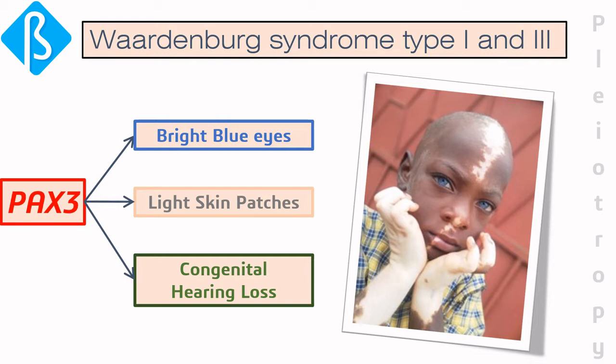Exactly the same phenomenon is seen in Waardenburg syndrome type 1 and type 3 in humans, where a defect in a single gene leads to bright blue eyes, light skin patches, and some extent of congenital hearing loss.